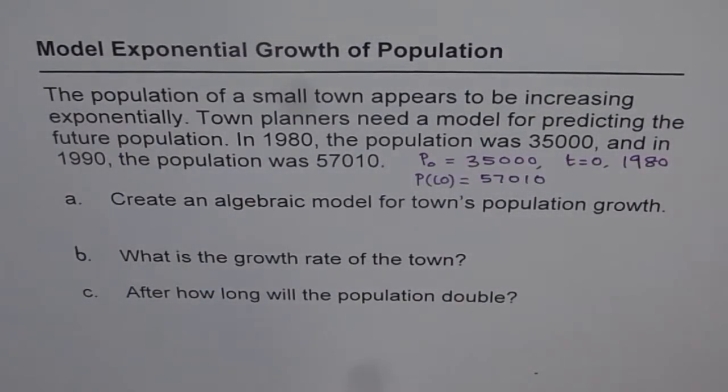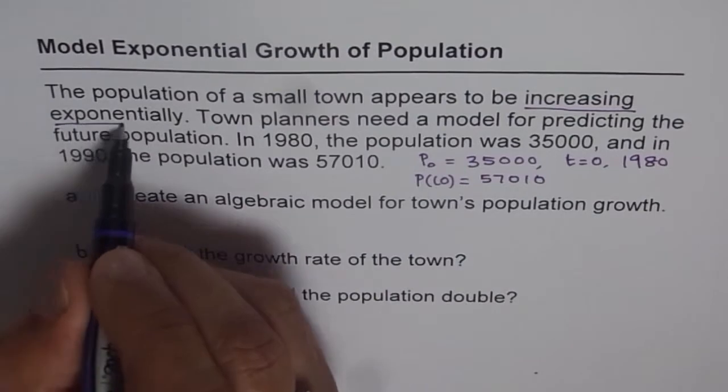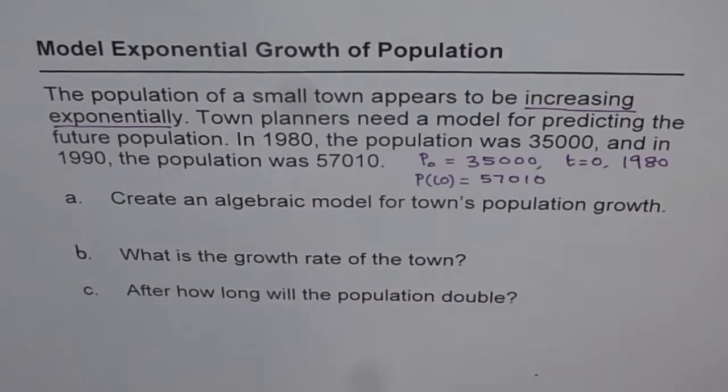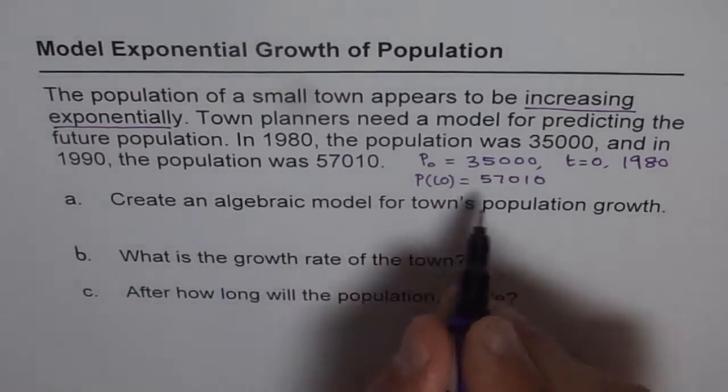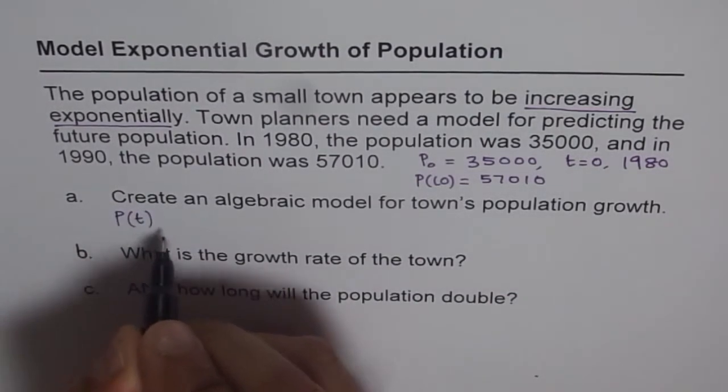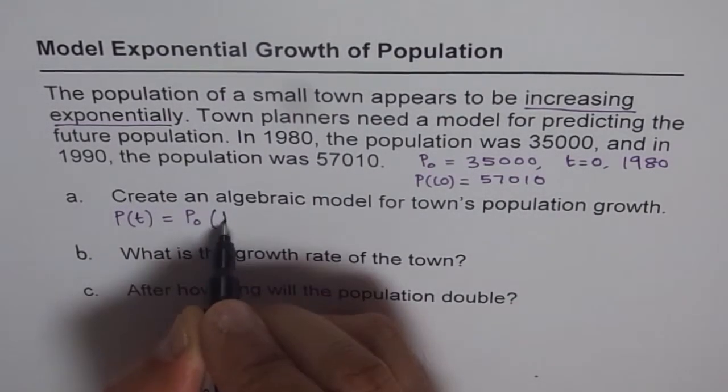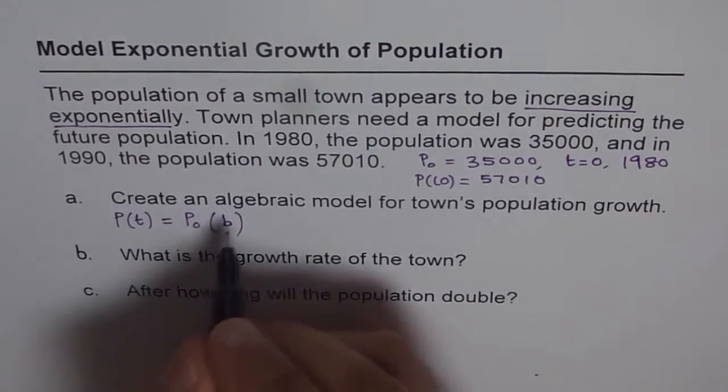Now since the population is exponentially growing, we have a model which will be an exponential model to represent this situation. Let the growth factor of this population be b. In that case we can represent this as a general equation: P(t), population at any instance of time, is equal to initial population times b, where b is the growth factor to the power of t.